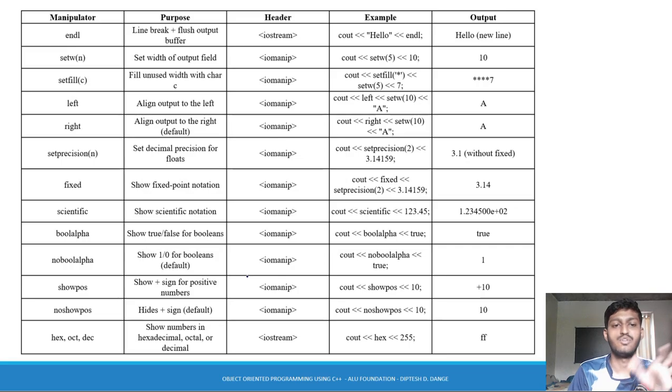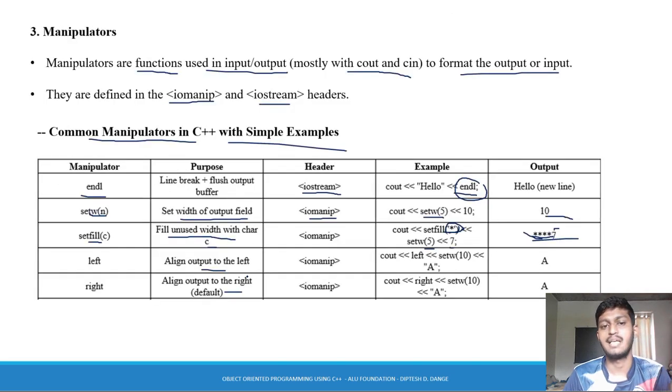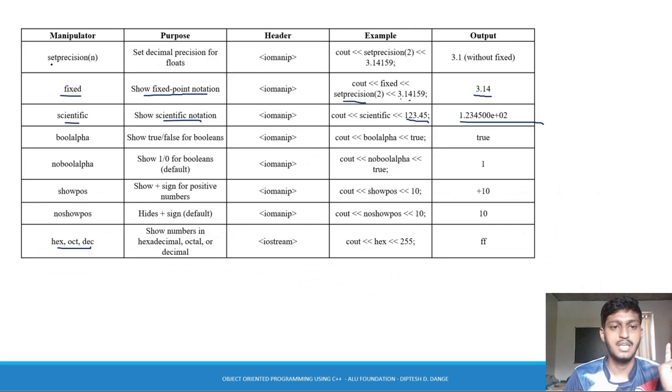These are the manipulators for you. Simple program, it doesn't need to answer to you. So manipulators and 5 manipulators - this is right. Fixed, setprecision, scientific or hex, octal, decimal, this. Show positive, no show positive, display output show here, display.